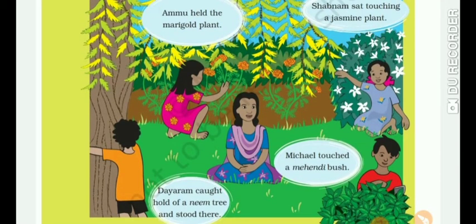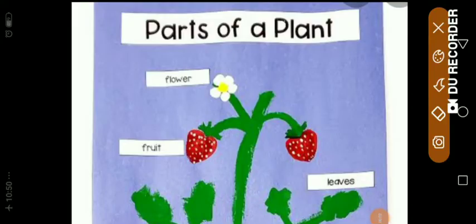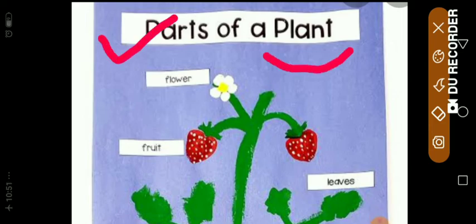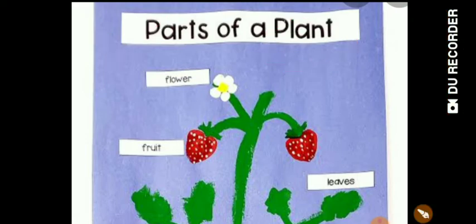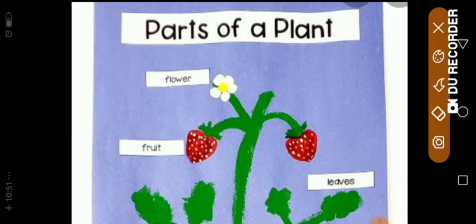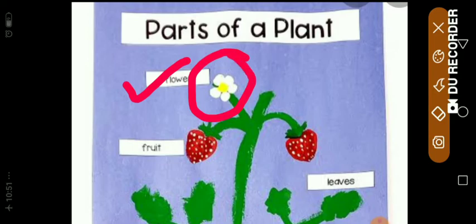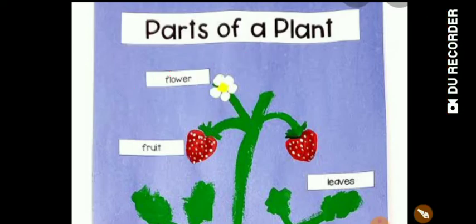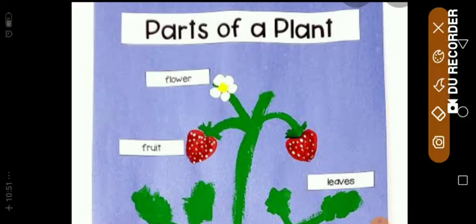Now here I want to show you parts of a plant, because our whole chapter is based on plants only. So we should also know about the parts of plants. The parts of plants are: flowers — as shown in the picture — and leaves.